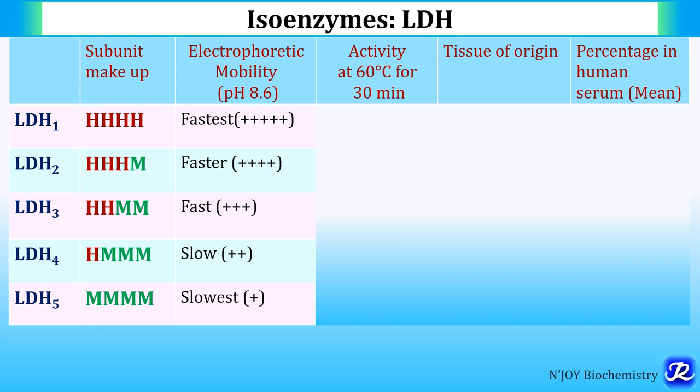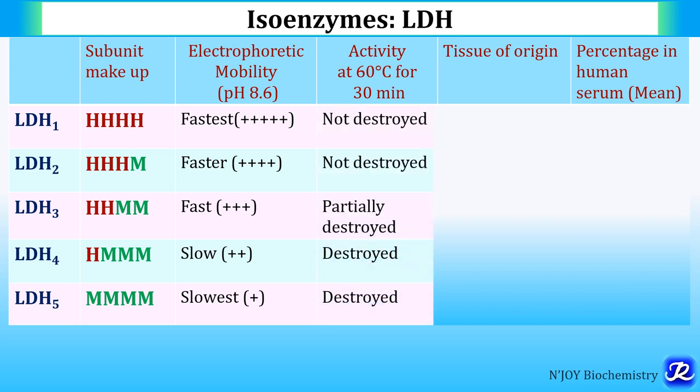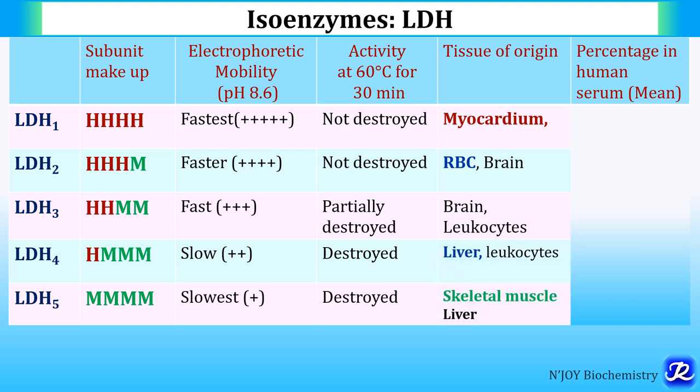Regarding activity at 60°C for 30 minutes: LDH1 and LDH2 activity is not destroyed; LDH3 and LDH4 are partially destroyed; and LDH5 activity is fully destroyed. Tissue of origin: LDH1 (H4) is present predominantly in the myocardium (heart); LDH2 predominantly in RBC; LDH3 in brain; LDH4 in liver; and LDH5 (M4) in skeletal muscle.